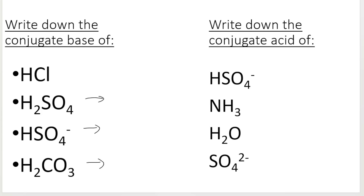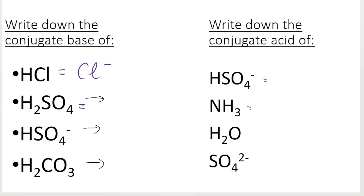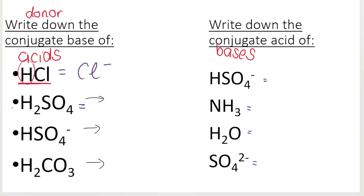Let's try this activity. Write down the conjugate bases of these acids. The conjugate base of HCl is Cl minus — we did this one already. They want the conjugate base, which means all of these given are acids. Acids are proton donors, so if HCl gives away its H it becomes Cl minus. H2SO4 — if it gives away an H plus, it's going to form HSO4 minus, not H2SO4, because it's giving away one of its Hs. HSO4 minus, not H2SO4.